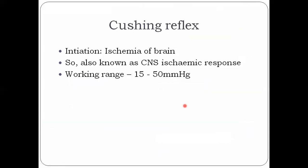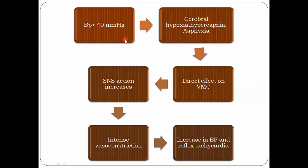The Cushing reflex is initiated by ischemia of the brain and is also known as the CNS ischemic response. Its working range is 15 to 50 mmHg — when blood pressure is between 15 and 50 mmHg, the Cushing reflex comes into action. When blood pressure drops below 40 mmHg, cerebral hypoxia and hypercapnia directly act on the vasomotor center, increasing sympathetic nervous system activity, causing intense vasoconstriction, resulting in increased blood pressure and reflex tachycardia.